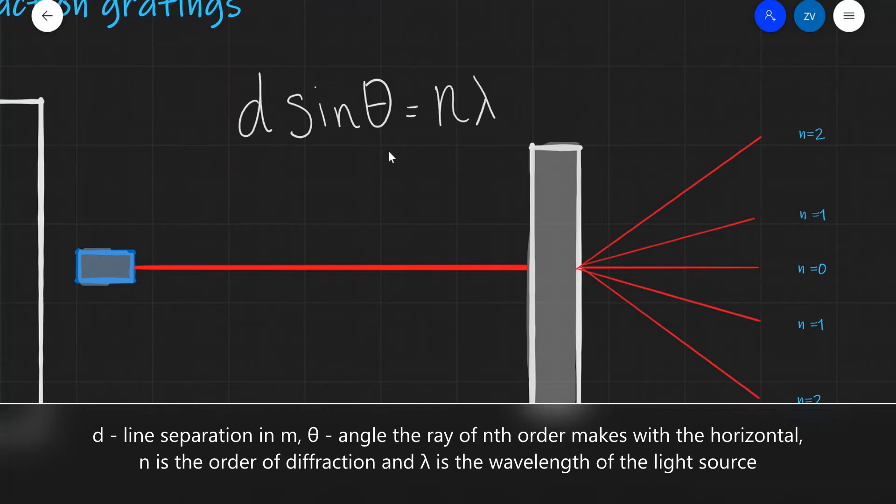Theta is this angle here—for n=1 it's this angle, for n=2 it's this angle. n is the order of diffraction: n=0 corresponds to the central maximum directly opposite the light source, n=1 is the next one along, n=2 is the next, and lambda is the wavelength.